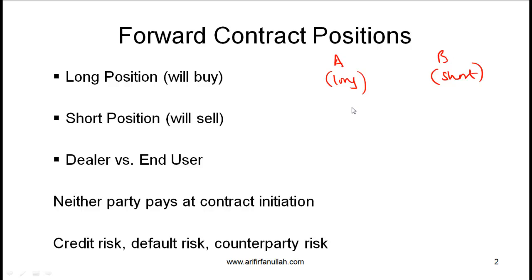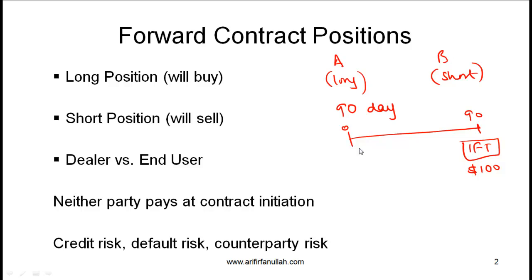Let's take a very simple forward position. Party A and party B get into a 90-day contract, meaning that if today is time 0, then at time 90 — which is 90 days from today — A will buy one stock of IFT for $100. The long party is the party making a commitment to buy, and party B which is short is making a commitment to sell.